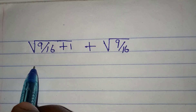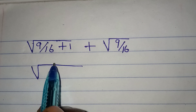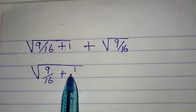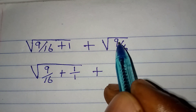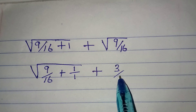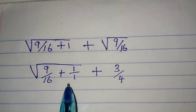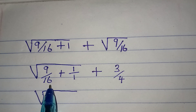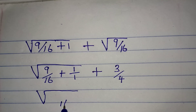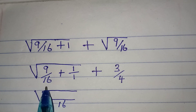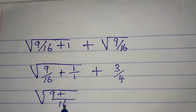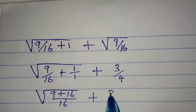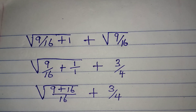Inside the first radical: 9 over 16 plus 1 over 1. The LCM of 16 and 1 is 16, so 16 divided by 16 is 1 times 9 is 9, plus 16 divided by 1 times 1 is 16. That gives us 9 plus 16 over 16. For the second term, square root of 9 is 3 and square root of 16 is 4, giving 3 over 4.